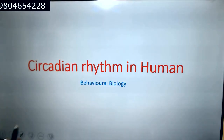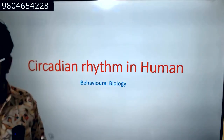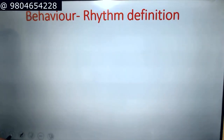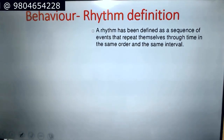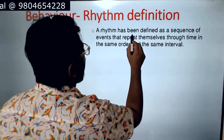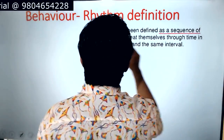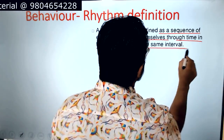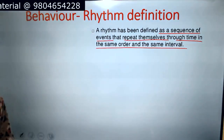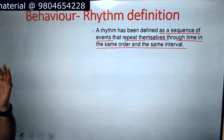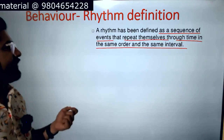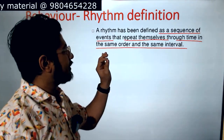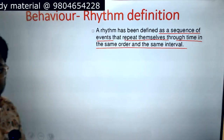We prepare this behavior part which is mostly from the rhythm, circadian rhythm. In the behavior rhythm, the definition of a rhythm: a rhythm has been defined as a sequence of events that repeat themselves through time in the same order and the same interval. That is known as a rhythm.